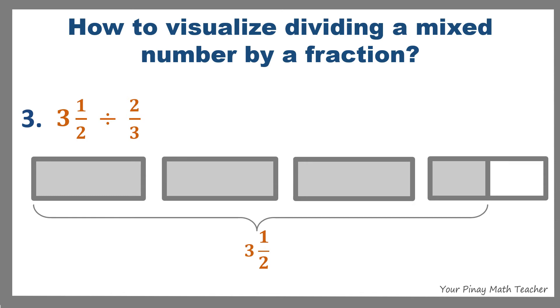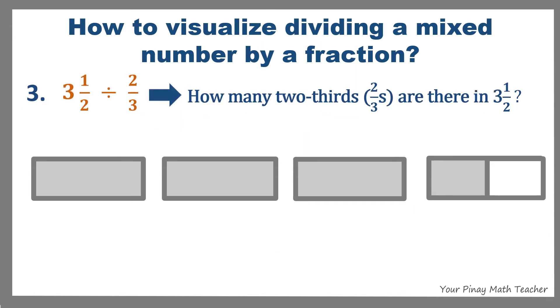Example 3: 3 and 1 half divided by 2 thirds. This expression answers the question, how many 2 thirds are there in 3 and 1 half? Since the last hole is divided into 2 equal parts, let us also divide the first 3 holes into 2 equal parts.